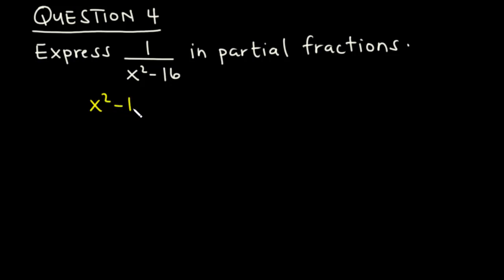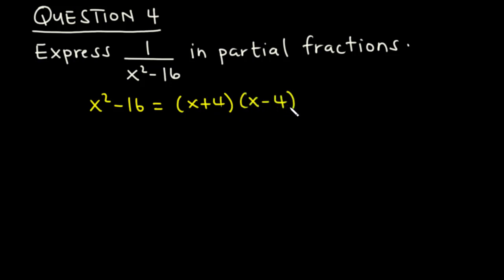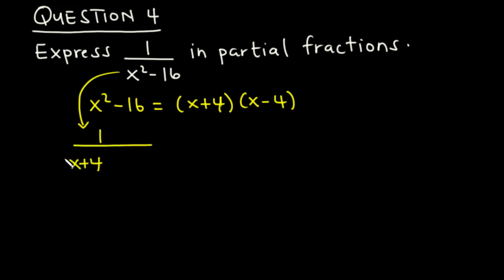We realize that x squared minus 16 is a difference of two squares, and we can represent that as (x + 4)(x - 4). So we can represent the whole expression as 1 over (x + 4)(x - 4).